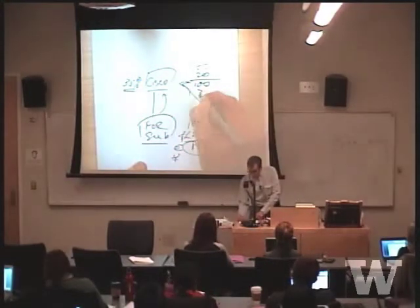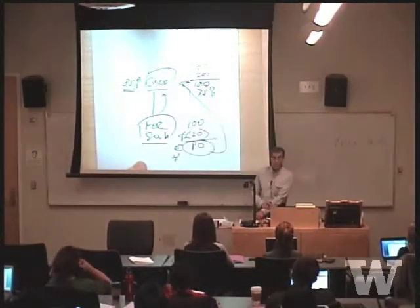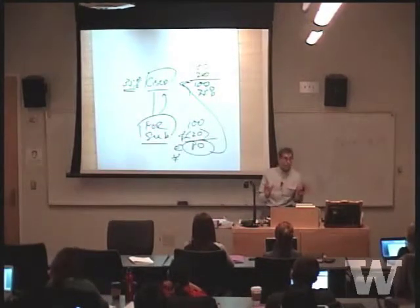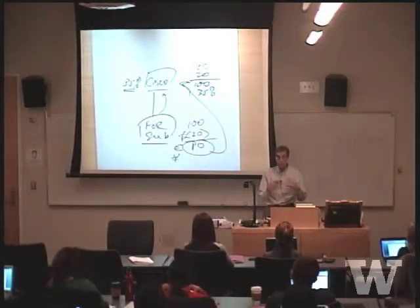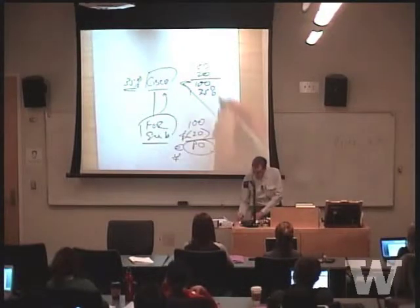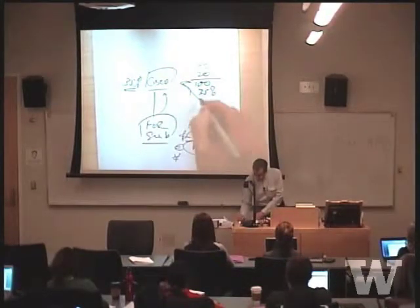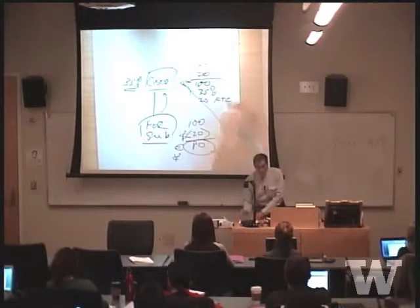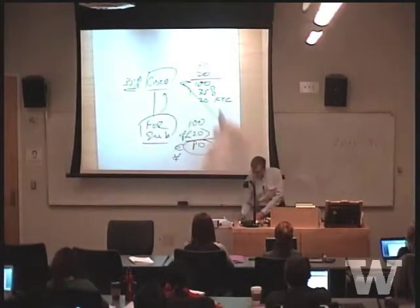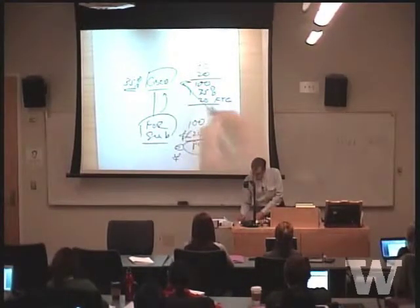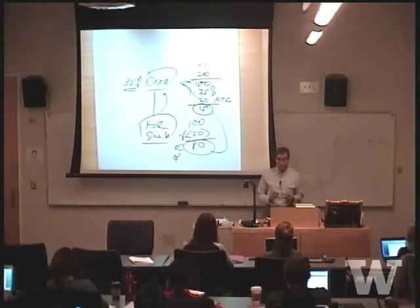We're going to apply a 35% rate or whatever rate is applicable in the year of the dividend. We're going to then take a 20 foreign tax credit. And we're going to pay 15 more to the U.S. government.